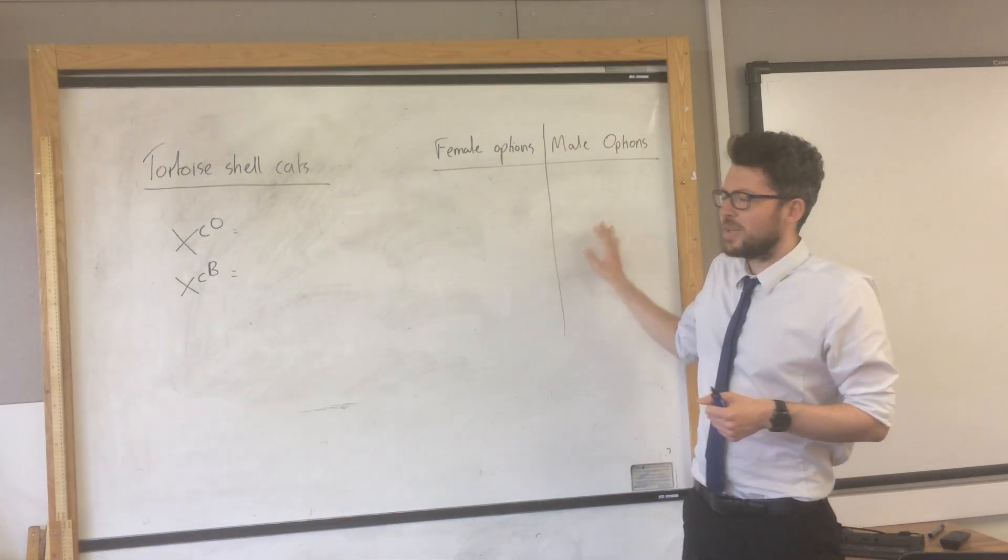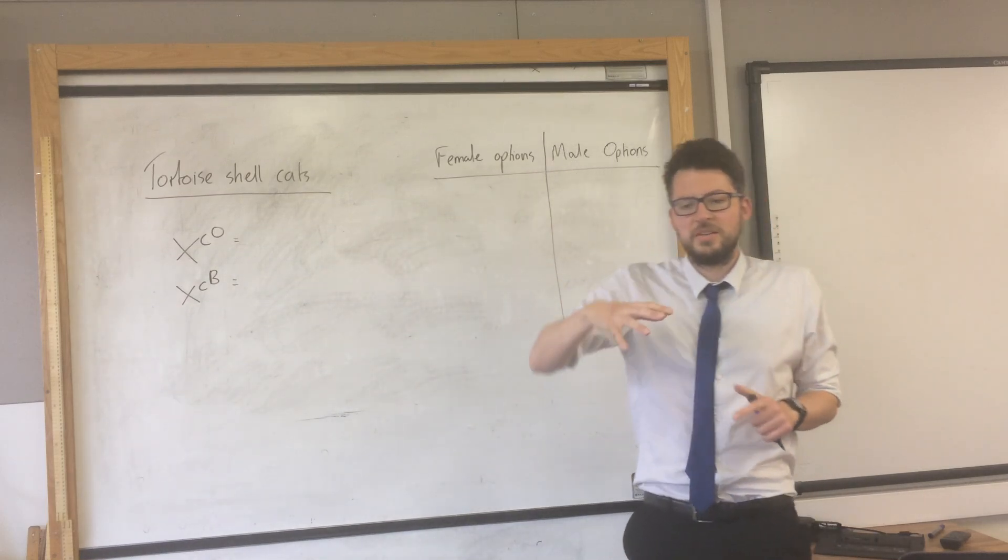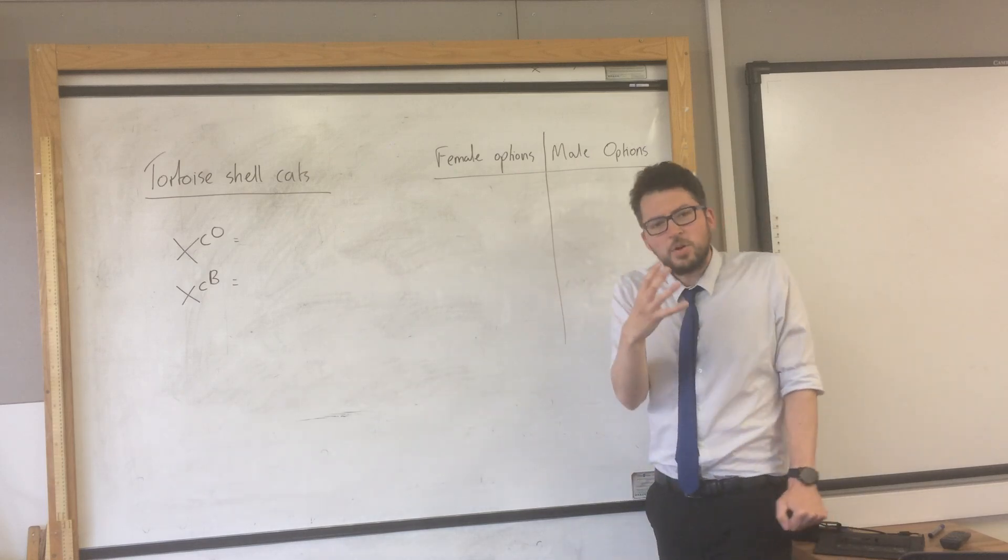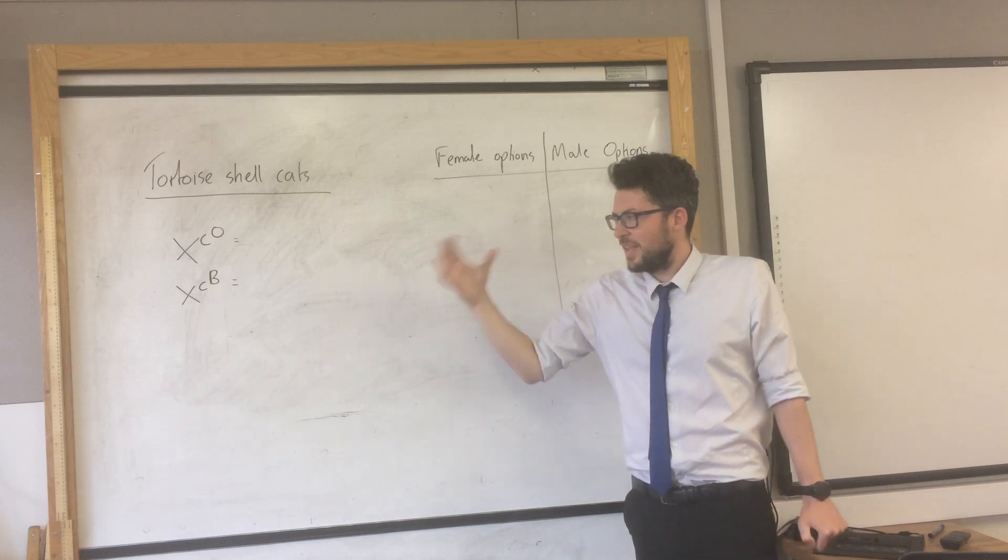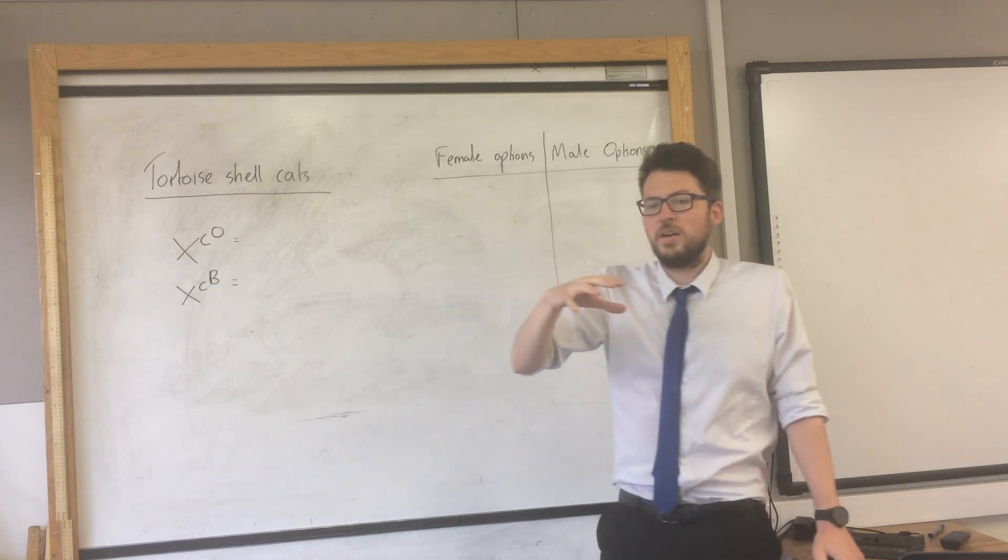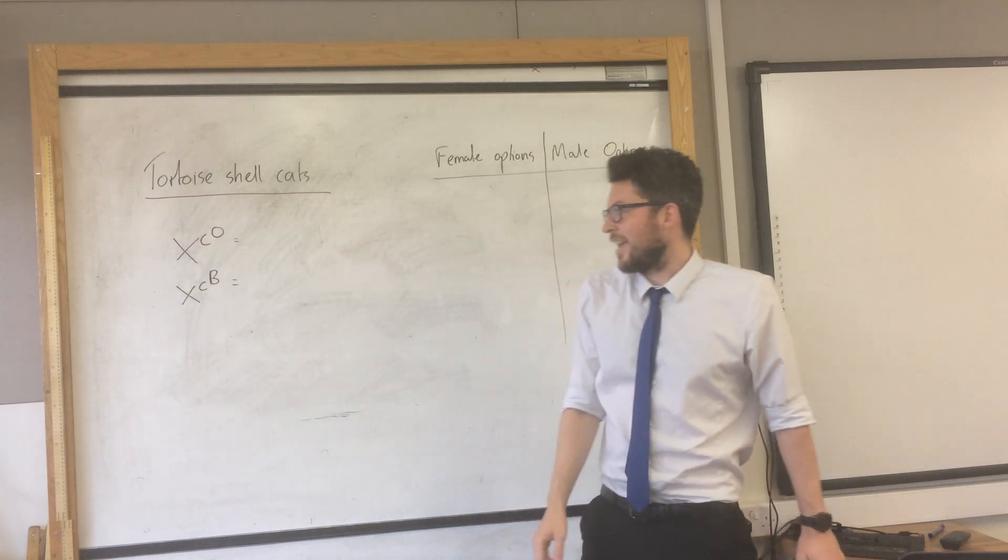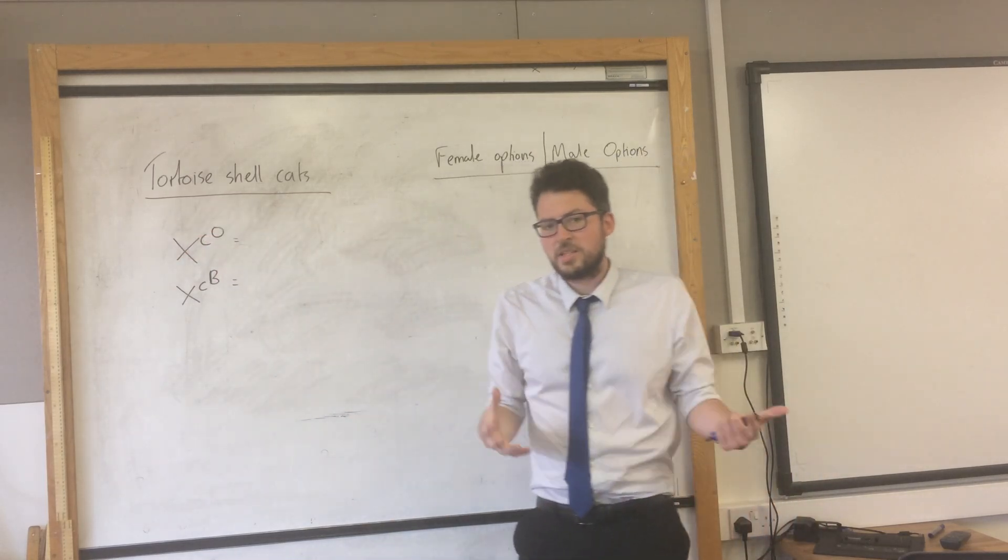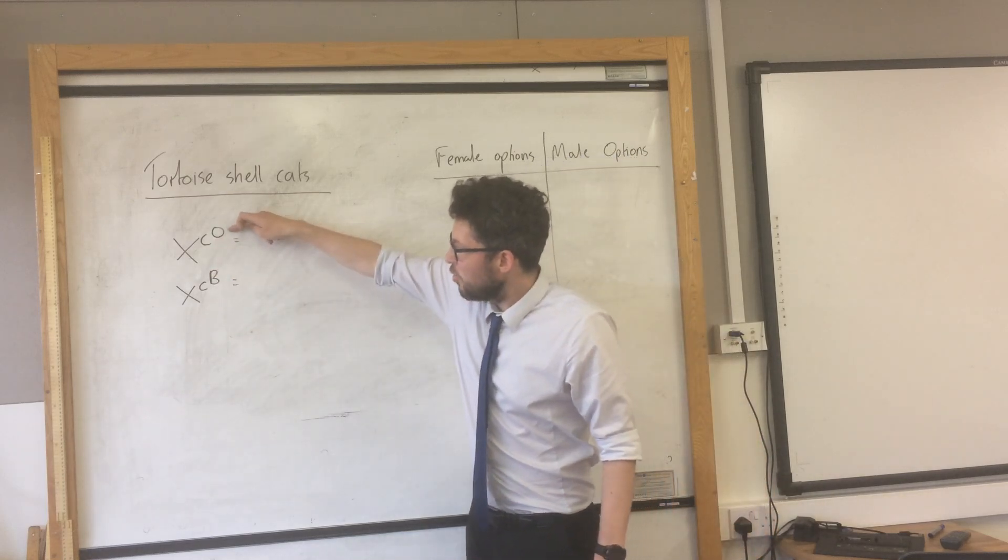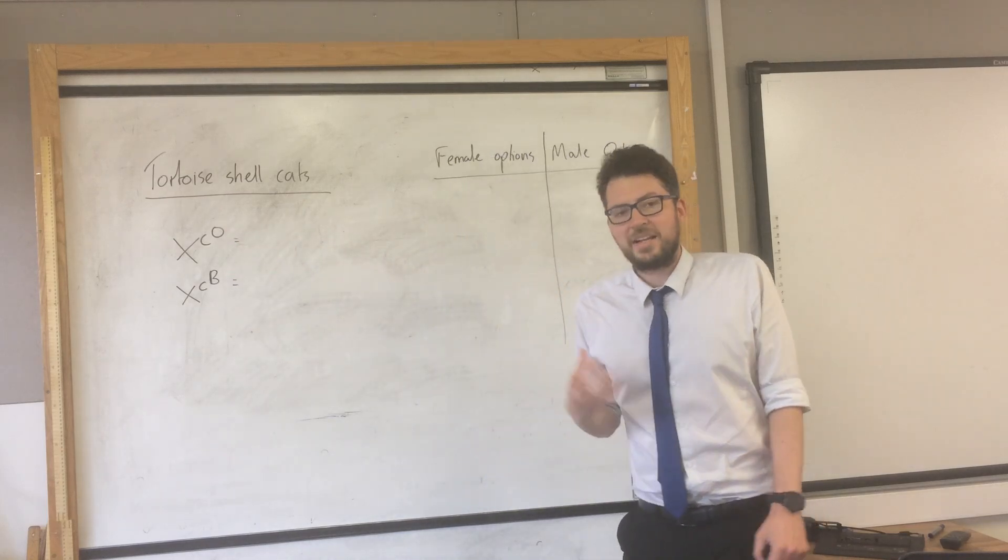So we've gone to another example and this one is tortoise shell cats. So these are cats that have kind of orange and black patches on them and they would always be female, and the reason for that is this. Now when we indicate the genes that are related to the X chromosome, we kind of put them next to the letter X. So X means on the X chromosome, the C means this gene is related to colour, and the O would represent orange fur and the B would represent the allele for black fur.